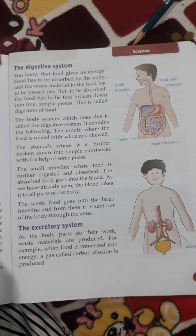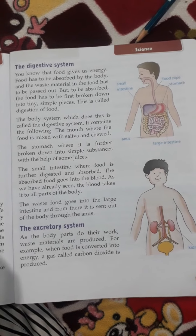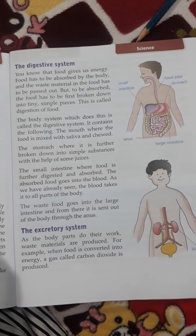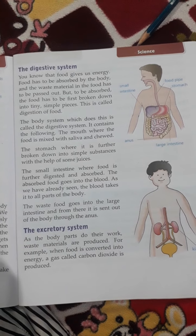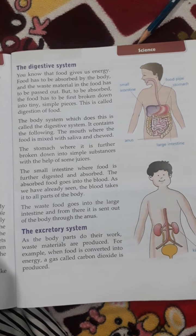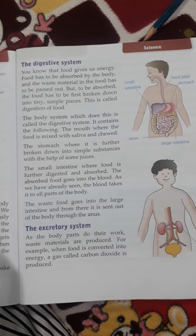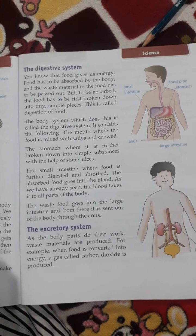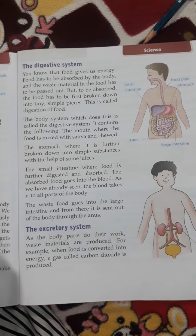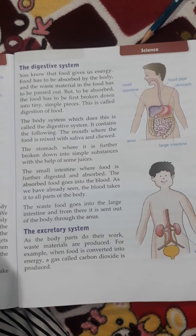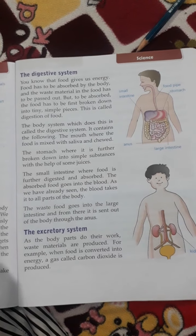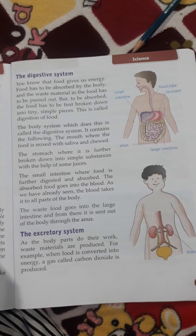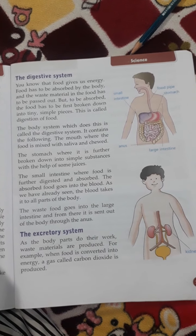The small intestine is where food is further digested and absorbed. The important material is absorbed and the waste material goes to the large intestine. The waste is then sent out of the body through the anus.